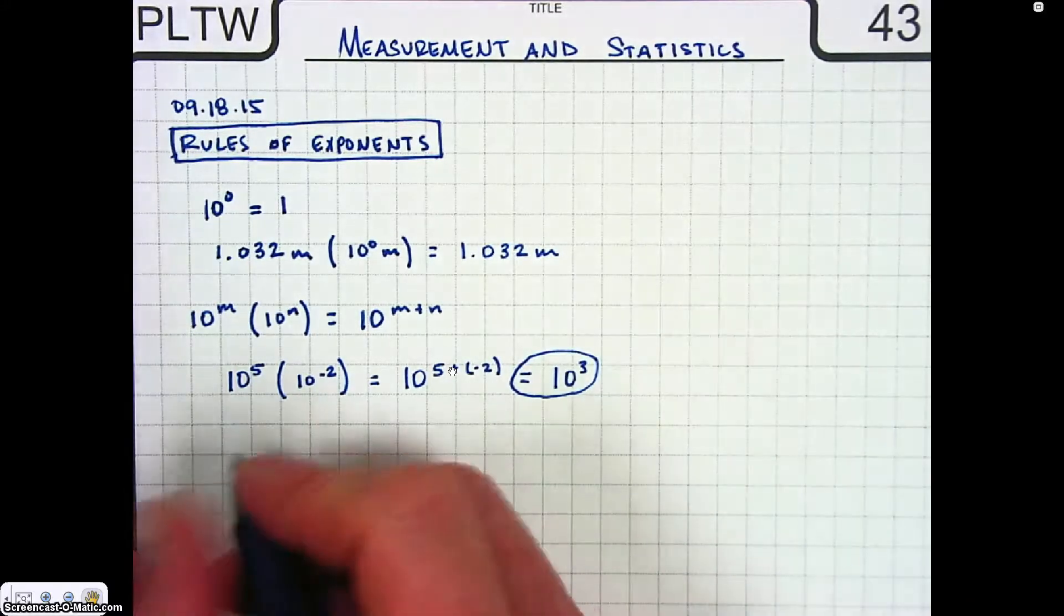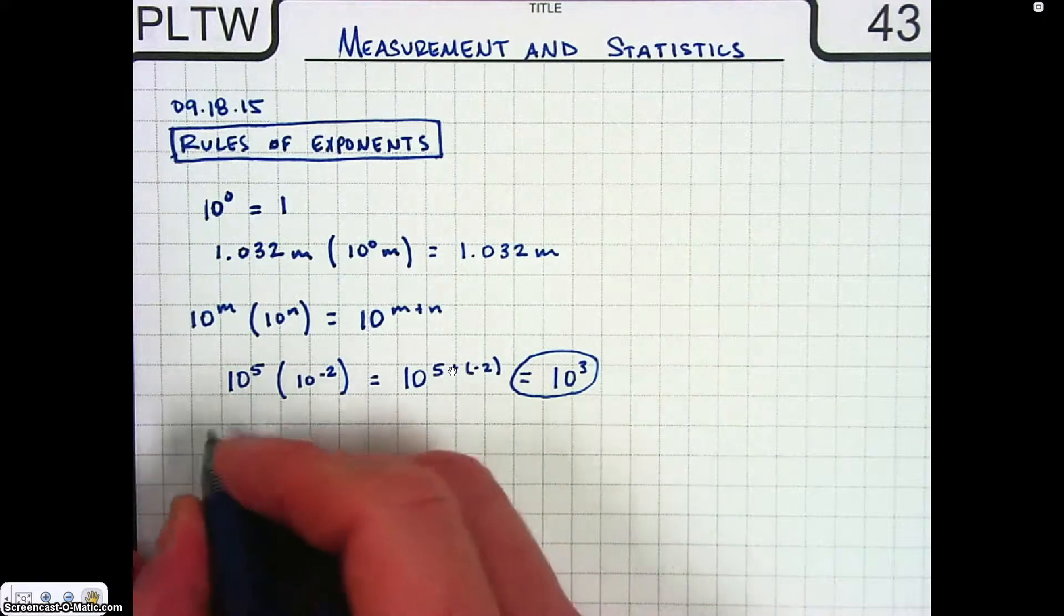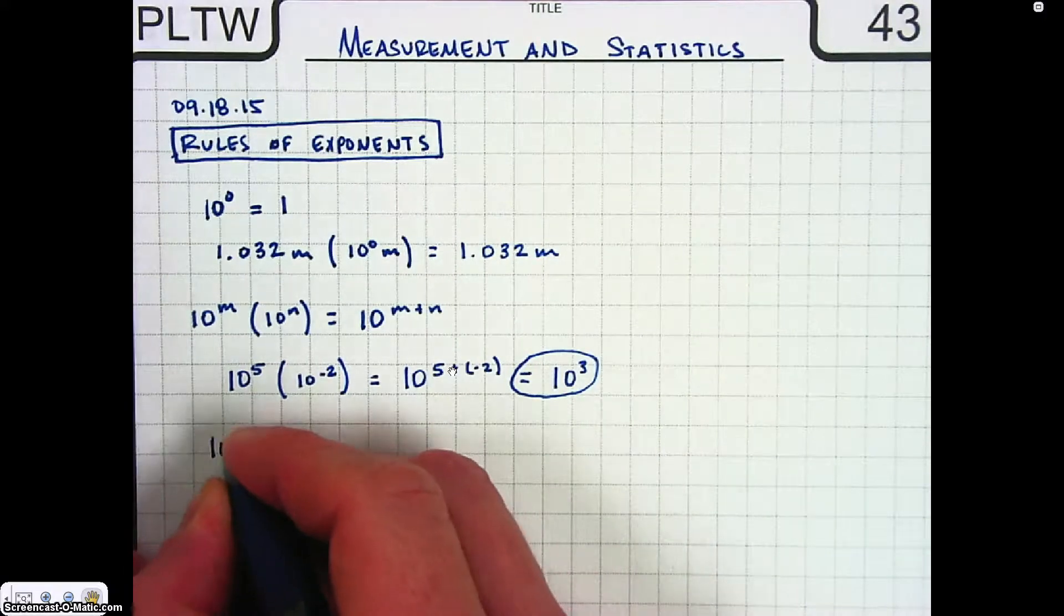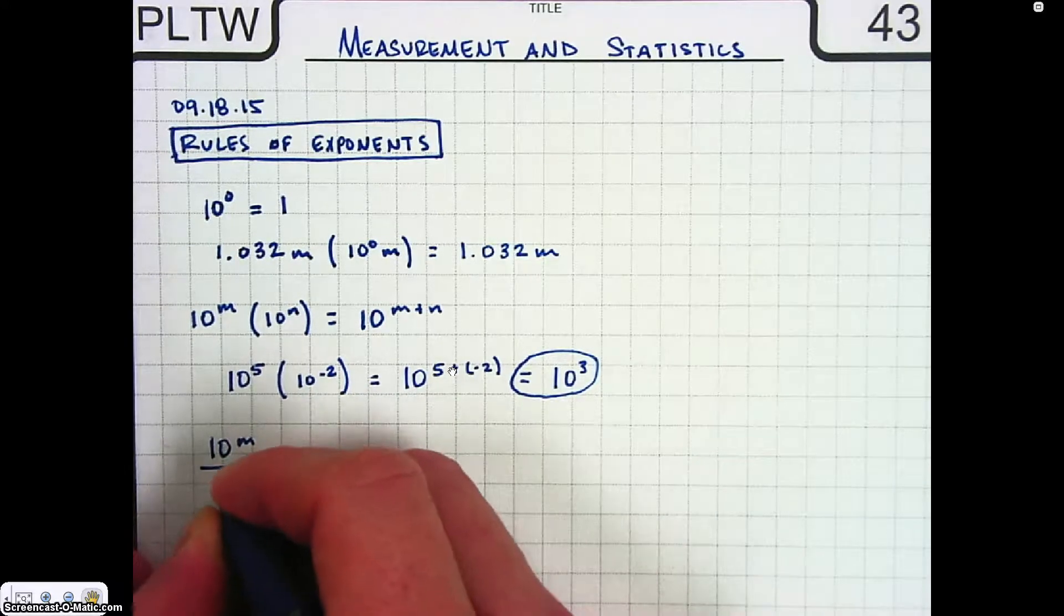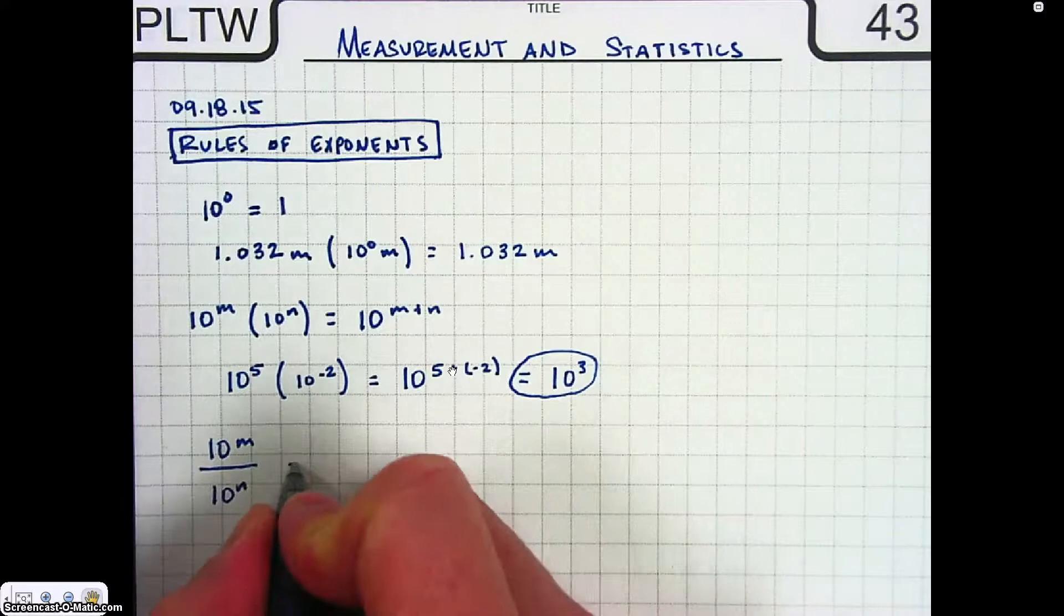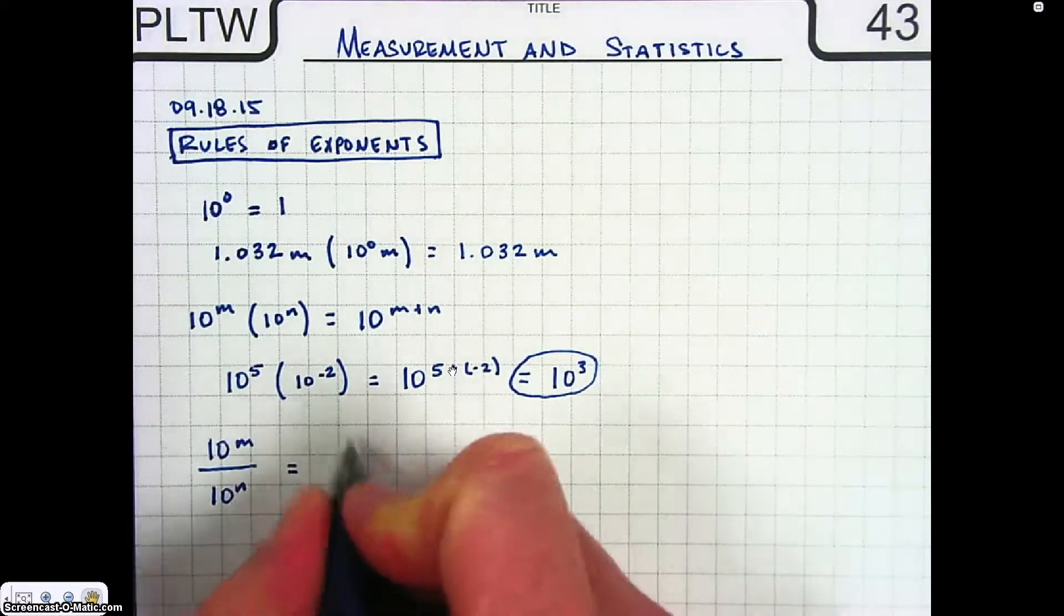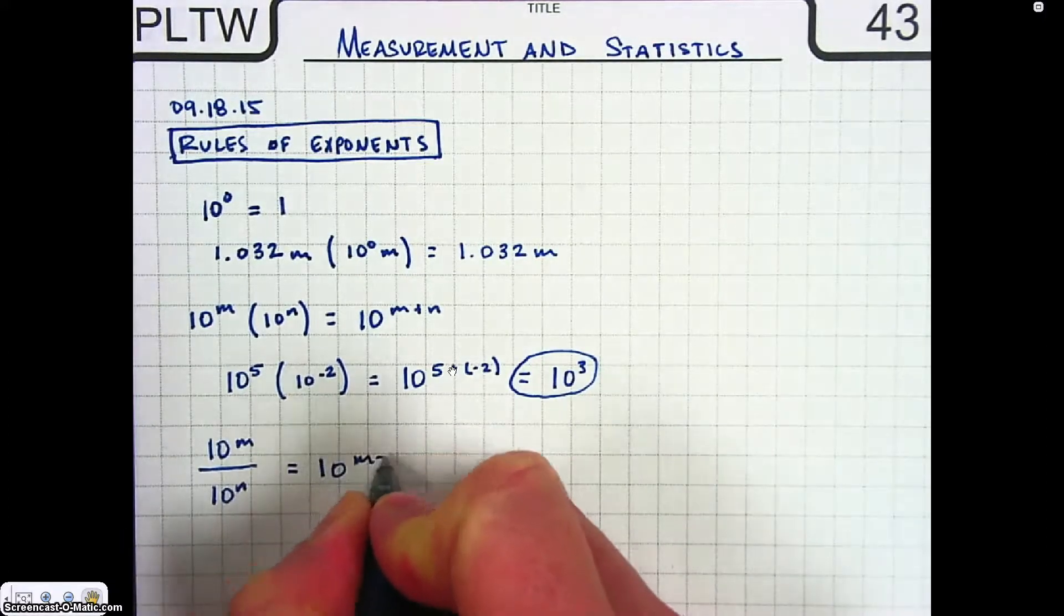Last one here, let's say we have 10 to the m over 10 to the n. That is equal to 10 to the m minus n.